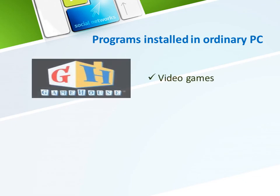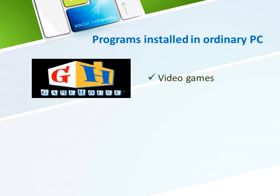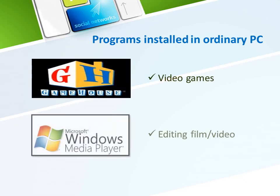The last two programs normally installed in an ordinary PC are Game House and Microsoft Windows Media Player. Game House consists of different video games, and Microsoft Windows Media Player is used for editing film and video.